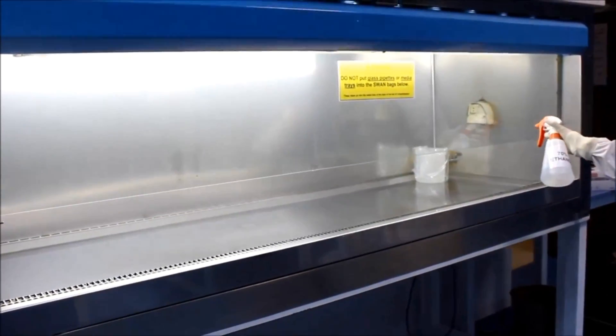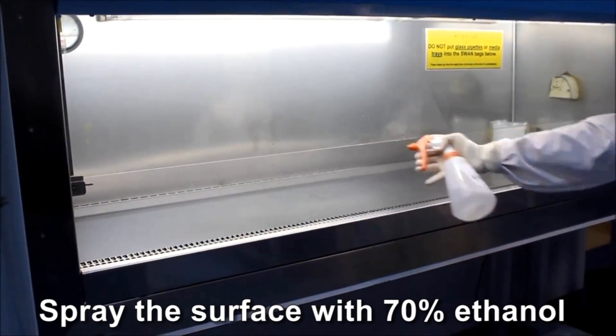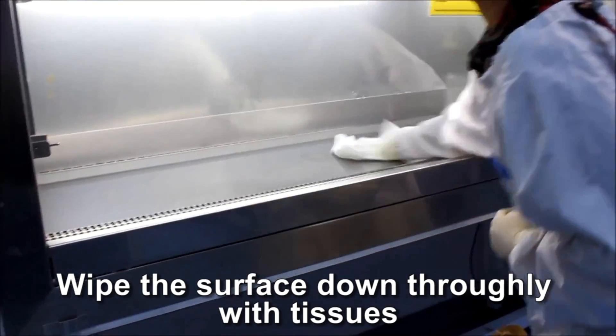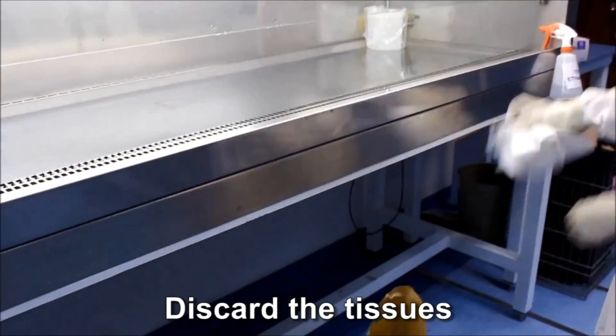Whenever placing your hands into the hood, make sure you are wearing gloves. Spray the surface of the cabinet with 70% ethanol. Wipe it down with tissues. Dispose of the tissues into a swan bag.